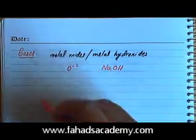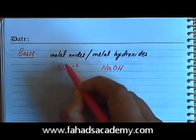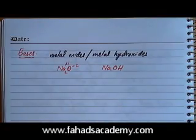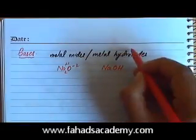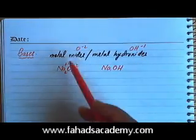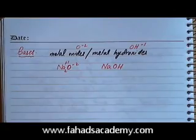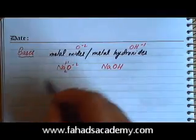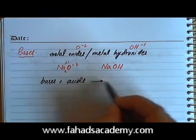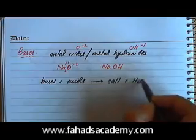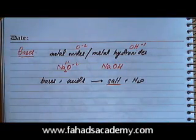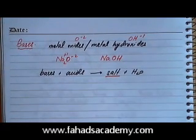The basic definition of a base is that bases react with acids to produce salt and water. A salt is simply formed by replacing the hydrogen ion in the acid with the metal ion from the base. For example, NaOH plus HCl: the H⁺ in HCl is replaced by Na⁺ from the base to give NaCl as the salt, plus a water molecule.